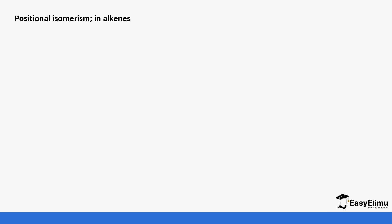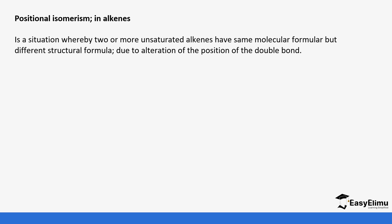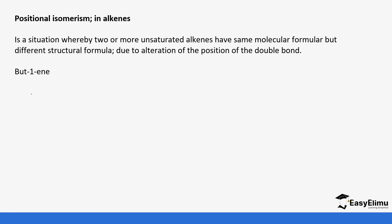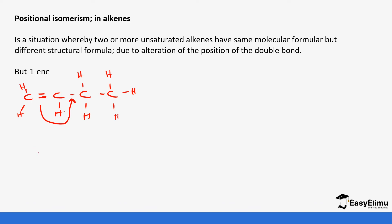Next we have positional isomerism. Positional isomerism is where we alter the position of the double bond. For example, in but-1-yne it means there are four carbons and the double bond is at carbon number one. This is how but-1-yne looks. If you move the double bond to the next position it changes — so we have moved the double bond and it is no longer at carbon one; it moves to carbon number two.